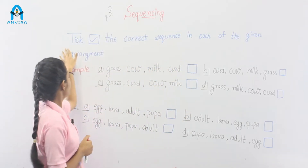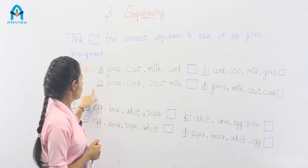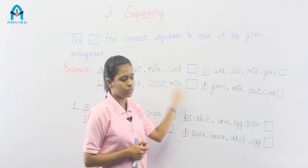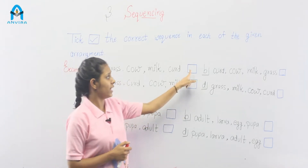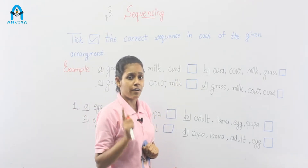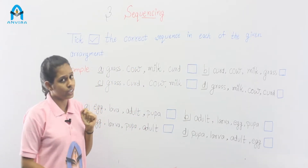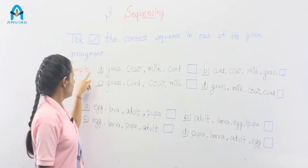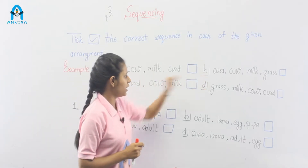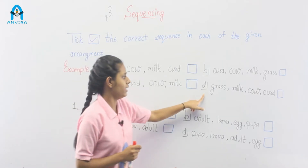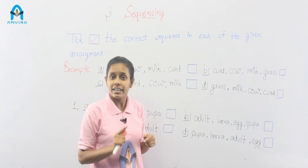Now read the question. Take the correct sequence. You have to choose from four options. There are different sequences and you have to find out which sequence is the right sequence. Now first of all look at the example. There we have four options: A, B, C and D. You have to find out which sequence is the correct sequence.